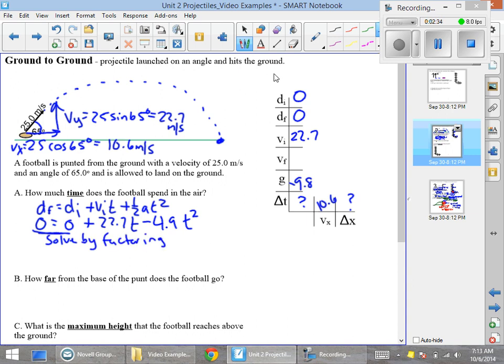Which is what we shall do. We will factor out a t. We'll get t equals 0. We will have another expression where we have 0 equals 22.7 minus 4.9t. So to solve for t, all we have to do is take 22.7 over to the other side, divided by 4.9. We have a negative divided by a negative, which gives us a positive time.